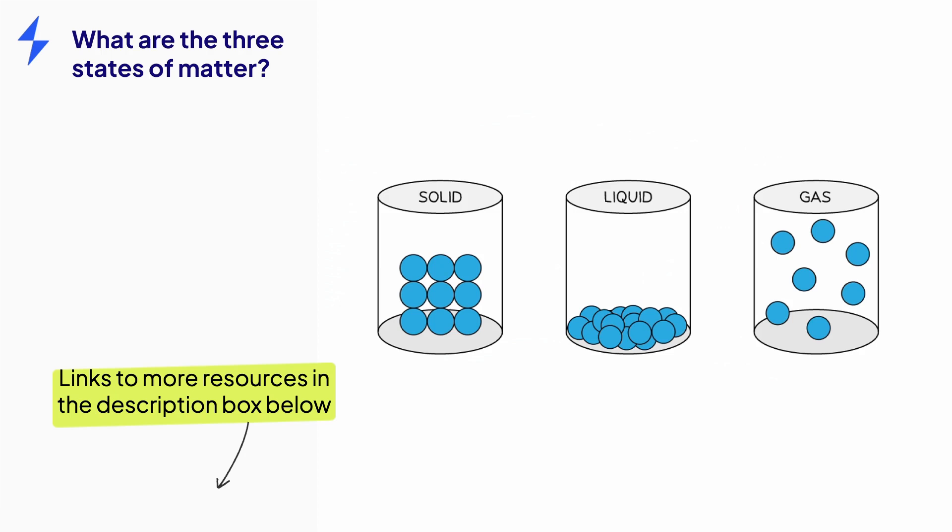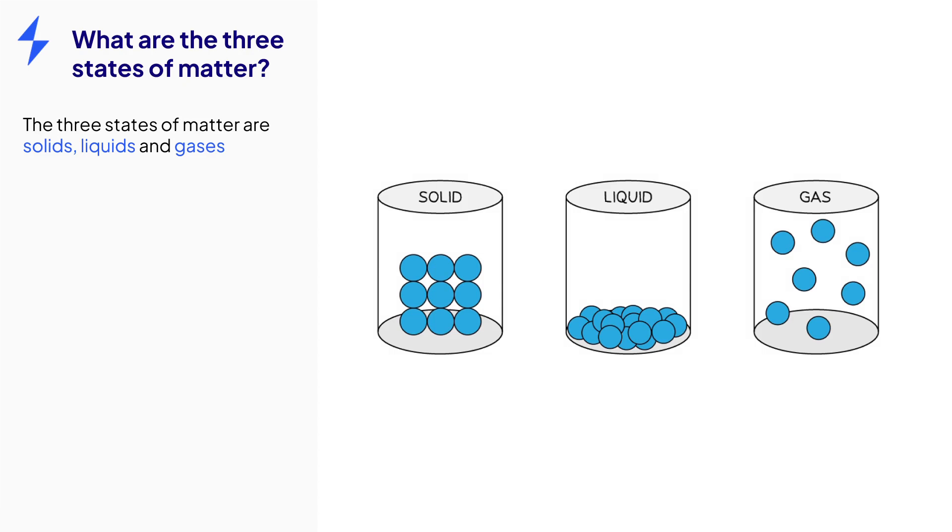Materials come in three different forms: solids, liquids and gases, also known as the three states of matter. You must be able to describe the particle arrangement for each state and link this to its properties. So let's start with solids.